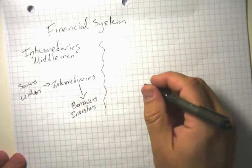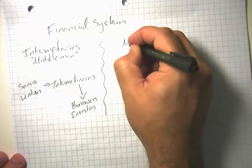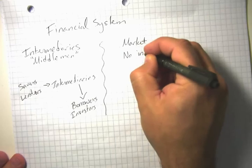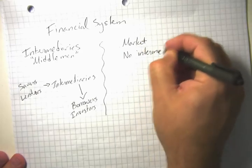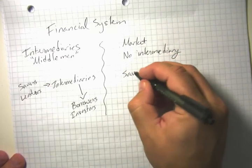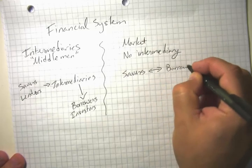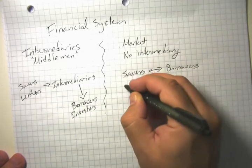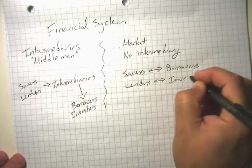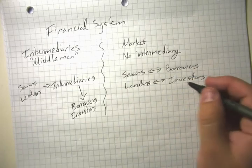People who are engaging in that investment spending. This is in contrast to a financial market where there's no intermediary, no middleman, and we're going to have savers and borrowers directly interacting. So lenders and investors directly interacting. So I'll go ahead and do a video segment on each of those.